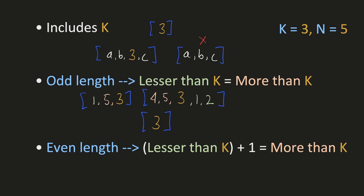In the case of even-length subarrays, if we sort the array in ascending order, k should be the left middle element. So there will be one extra element to the right of k compared to the left. Hence, the count of numbers lesser than k plus 1 should be equal to the count of numbers greater than k.